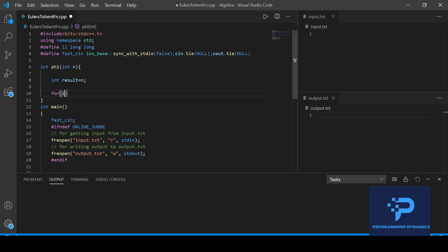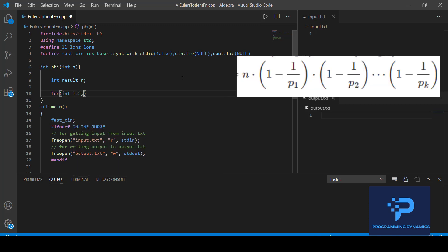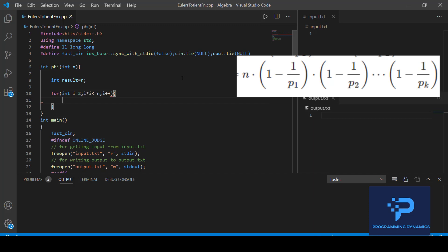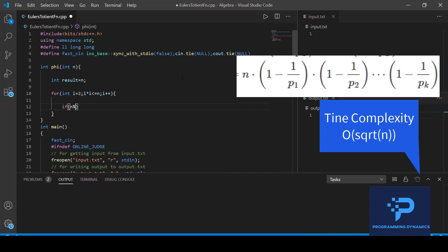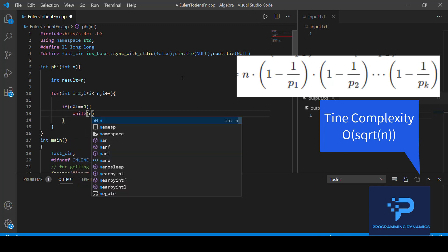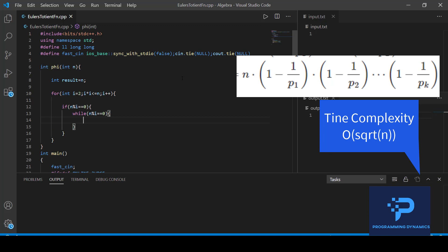Now I will run a loop from i equal to 2 till square root of n and as I said that we will be using the prime factorization technique somewhat similar. So now if we have an i such that it divides n, I mean it is a factor of n, then while n modulo i equal to 0 which means we will continue dividing n by i until we do not have any factor remaining of i within n.